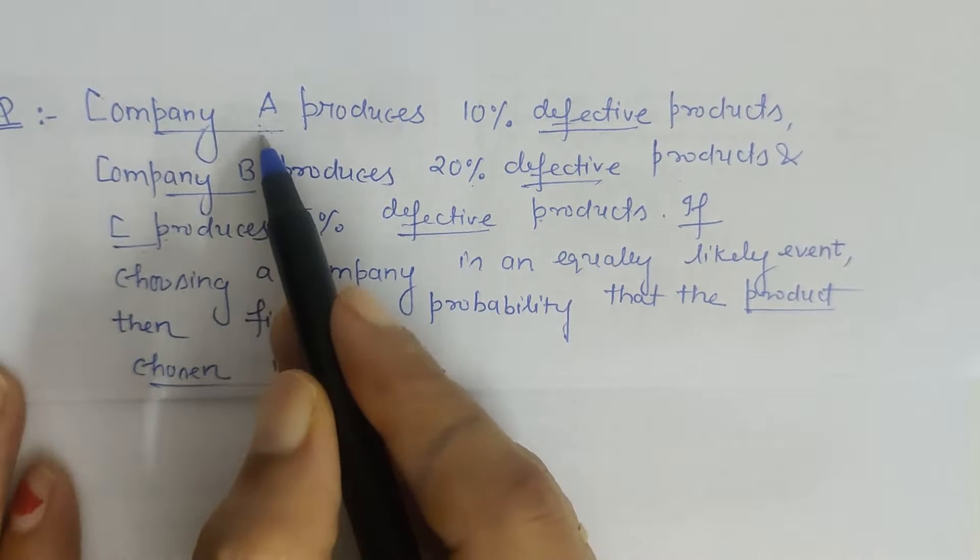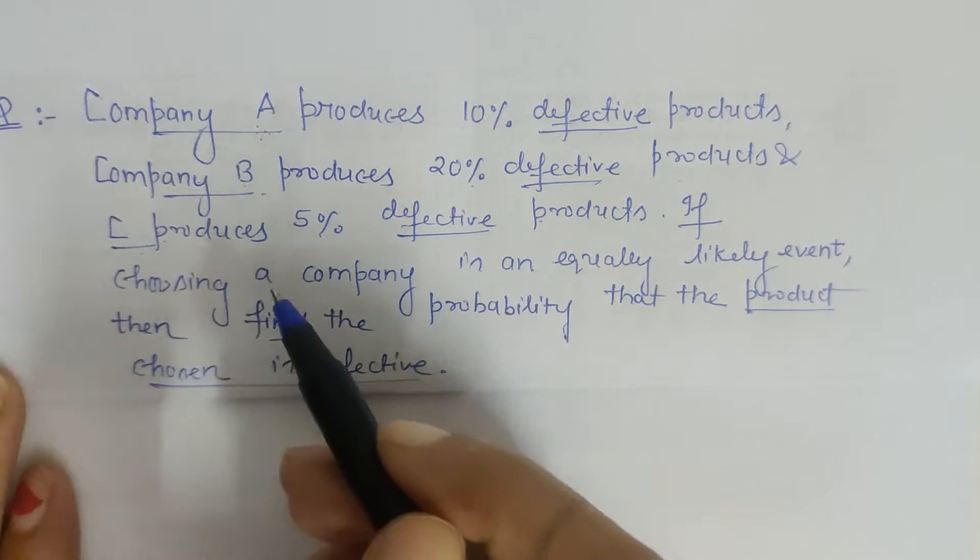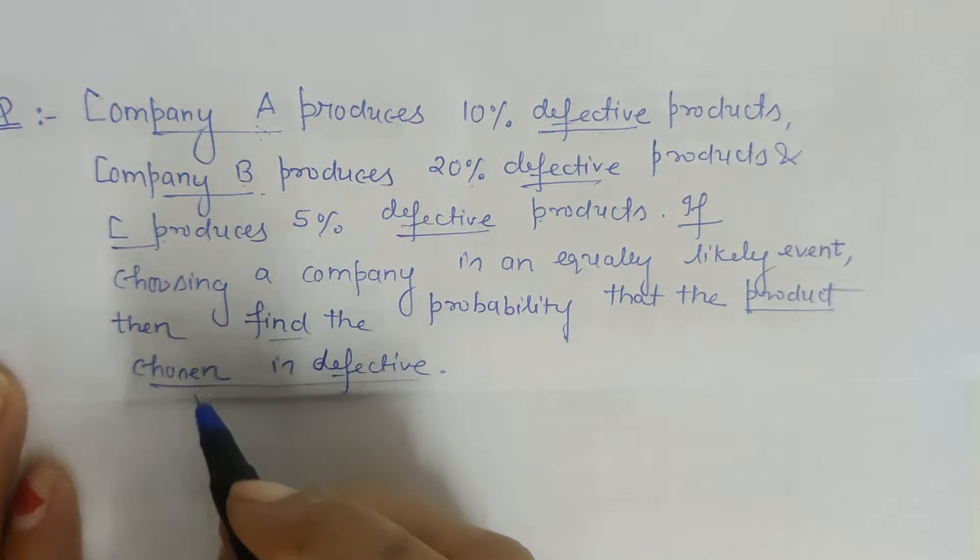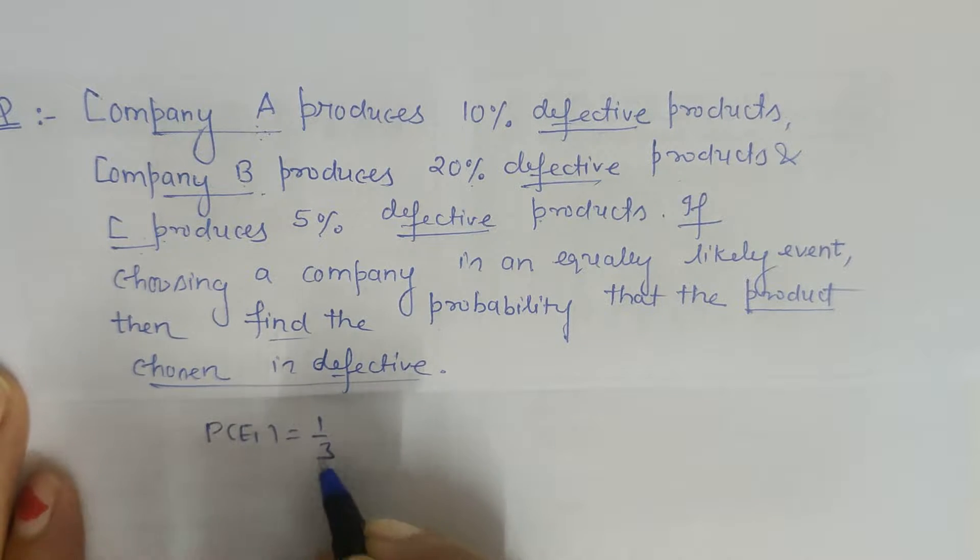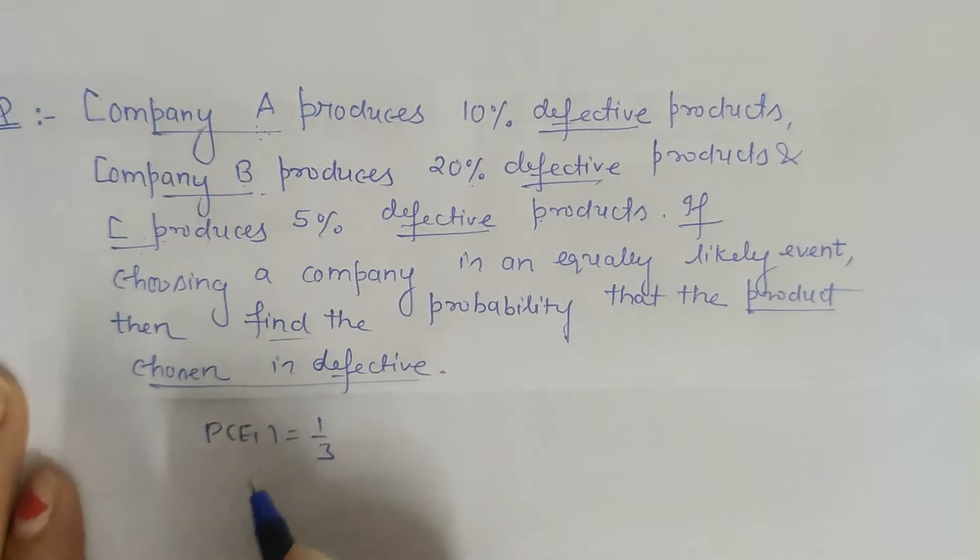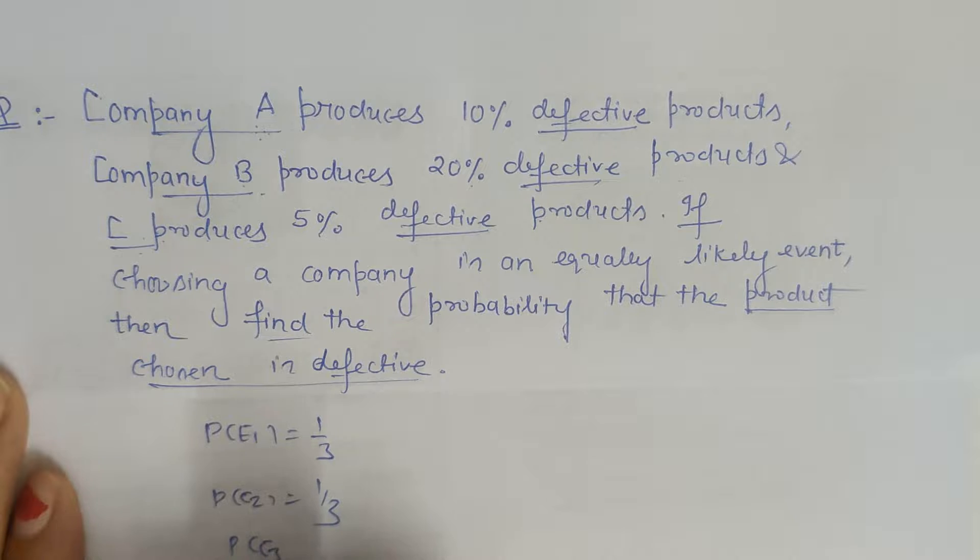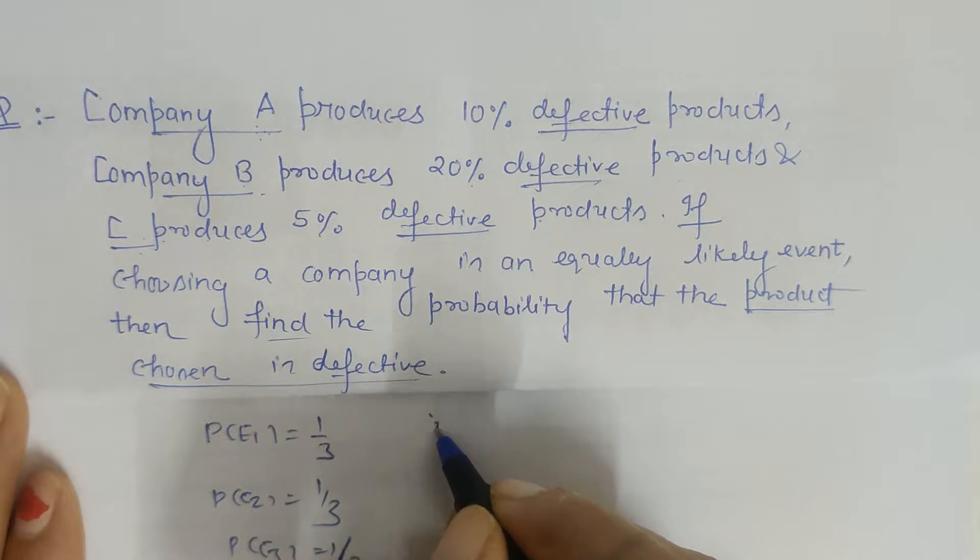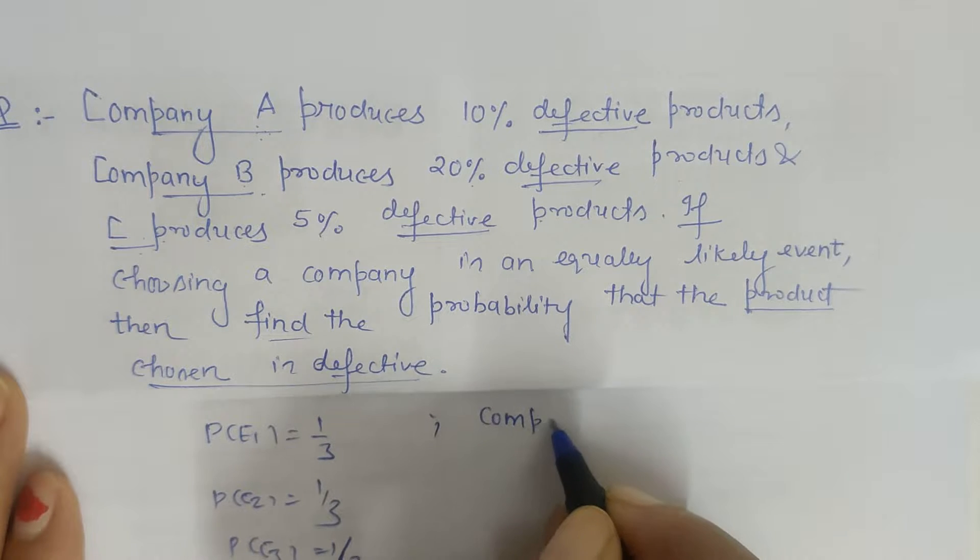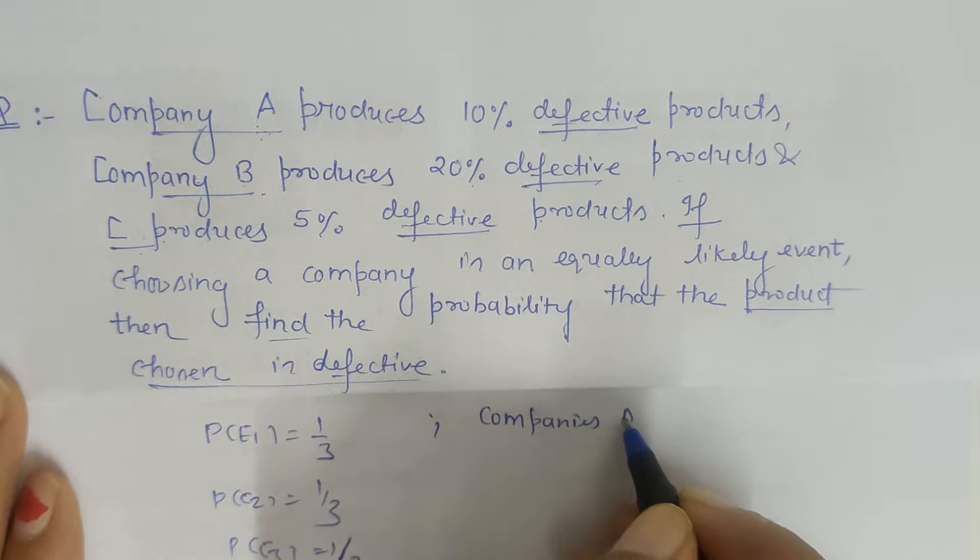But how many companies are there? Three companies, and all three companies are obviously disjoint. So their individual probabilities will be 1 upon 3. Probability of E2 is again 1 by 3, and probability of E3 is 1 by 3, where E1, E2, E3 are the companies A, B, and C.